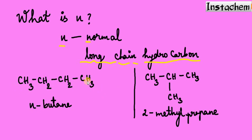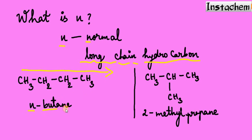Let's see an example to understand this. Take butane — here all the carbons are connected in a long straight chain. Whenever carbons are connected in a long chain, we can use the letter 'n'. It is a normal chain. We have four carbons, so 'bute', with only single bonds between carbons, giving us n-butane.